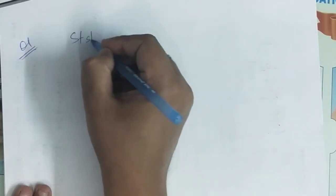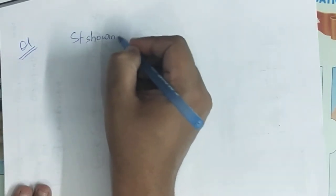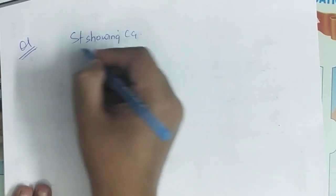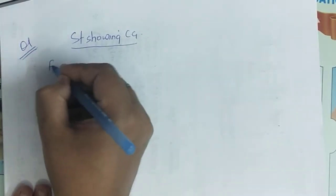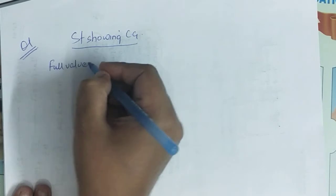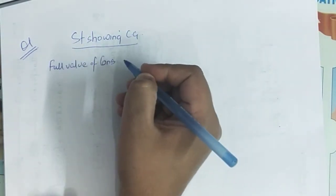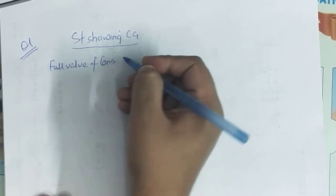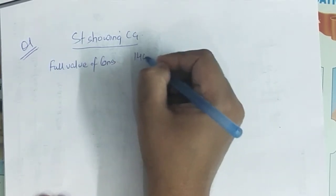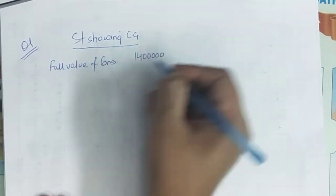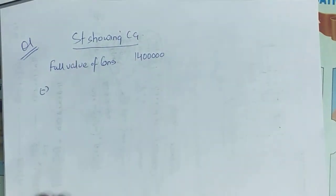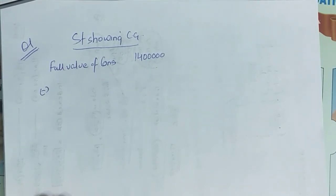Let's make a statement showing capital gains. In the statement of capital gains, first of all, full value of consideration — how much was the land sold for? Rs 14,00,000. Then minus: cost of acquisition or indexed cost of acquisition? That depends on whether the capital asset is short-term or long-term.